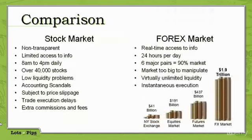Let's do a little comparison between the stock market and the Forex market. The stock market is non-transparent — there are a lot of things happening that we don't know about until it's too late. There's limited access to information, it's only open from 8 a.m. to 4 p.m. Eastern Time daily, and there are over 40,000 stocks to choose from. There are low liquidity problems, accounting scandals, subject to price slippage — it may not honor your stop losses, take profits, or levels. Plus trade execution delays and extra commissions and fees.